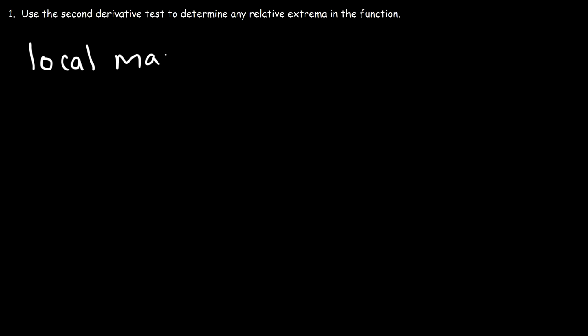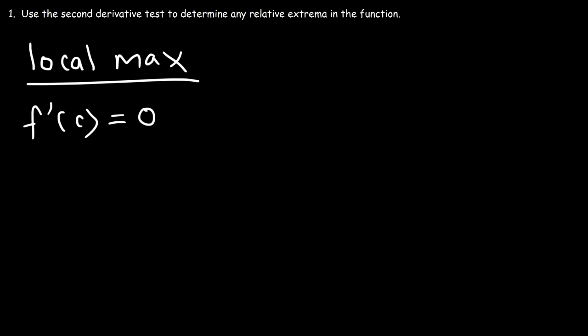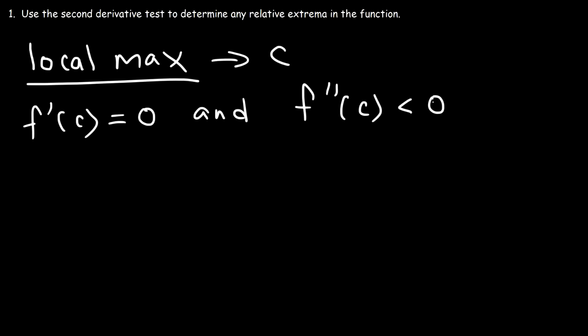In this video, we're going to use the second derivative test to determine if there's any relative extrema in the function — if there's a relative maximum or a relative minimum. For a local maximum, the critical number has to be found, so the first derivative has to equal 0 at some point c. f'(c) has to equal 0, and the second derivative at c has to be negative, or less than 0.